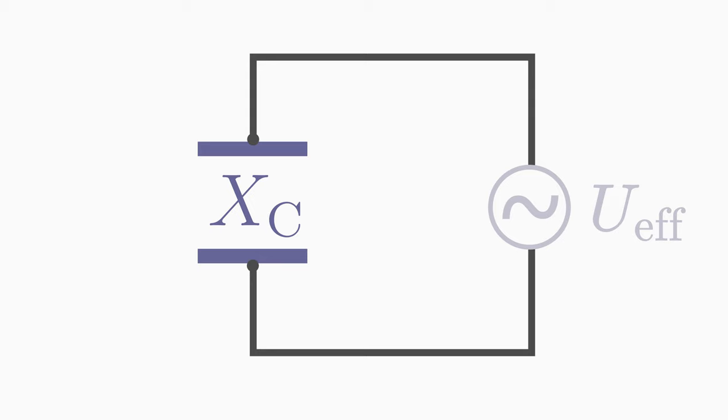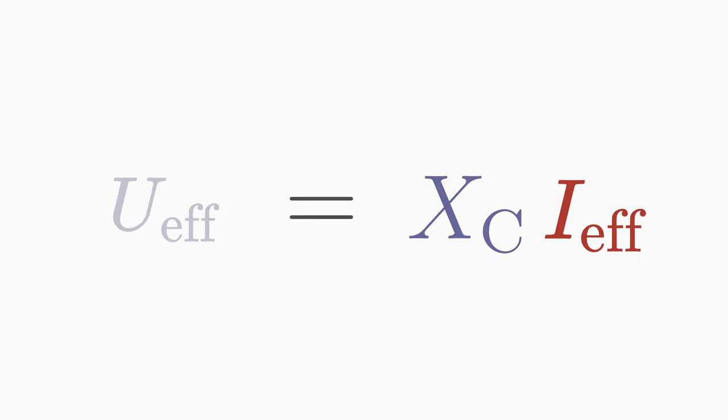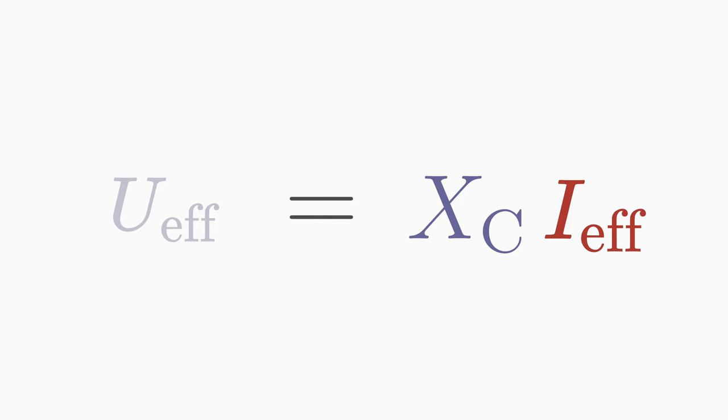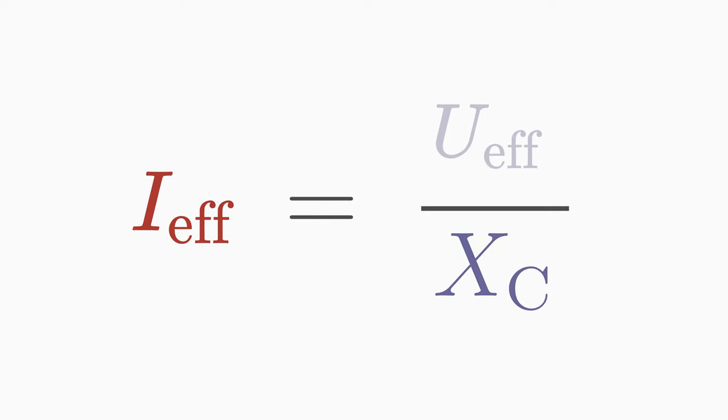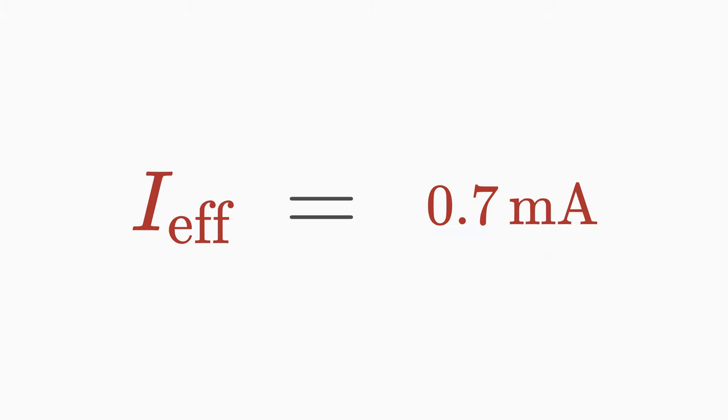To determine the RMS current flowing through the capacitor, use the URI formula. But instead of using the ohmic resistance R, use the capacitive reactance. Rearrange for the current. Insert the 230 volts RMS voltage and 318,000 ohms. Then you get an RMS current of 0.7 mA.